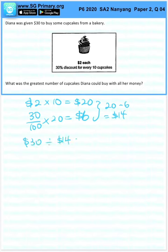30 divided by 14 will be 2 and 1 out of 7. So 2 times 10 is 20 cupcakes. 2 sets of 10, right?